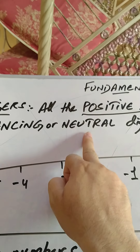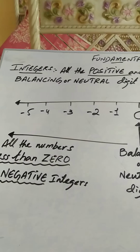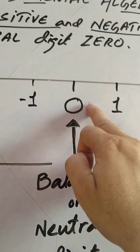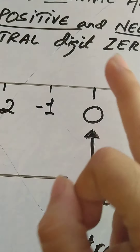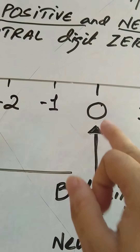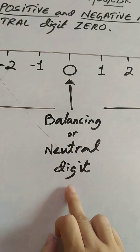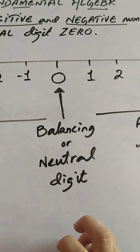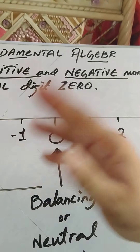Why do we call it a balancing digit? I will explain on the number line. This is a number line. So 0 has no sign — there is no sign before 0. It will not be negative, it will not be positive. So 0 is called a balancing digit or a neutral digit because it has no sign before it and it balances both sides.